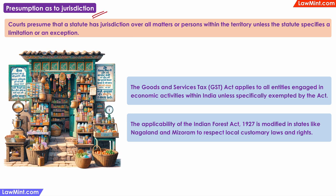Presumption as to jurisdiction. Courts will presume that a statute has jurisdiction over all matters and all persons within the territory unless the statute specifies a limitation or exception. For example, courts will assume the GST Act is applicable to all goods and services across India unless the act itself or the rules made thereunder allow for specific limitations or exceptions — such as exemptions for small and petty businesses or items like agricultural produce where GST is not applicable.